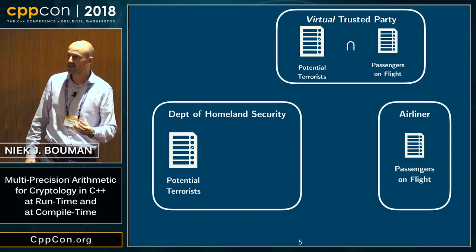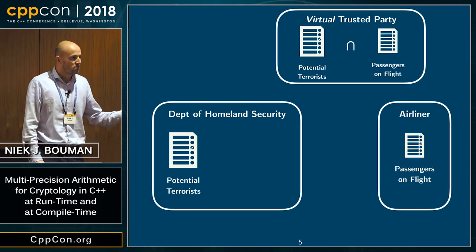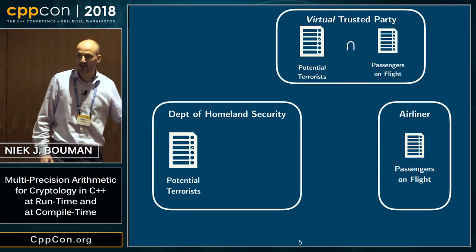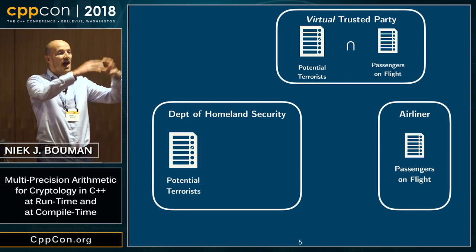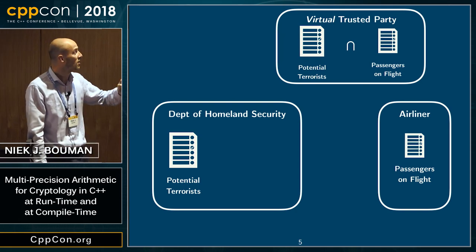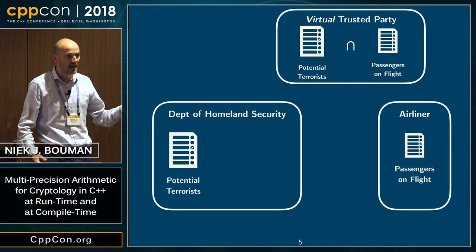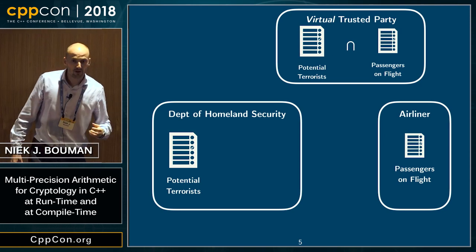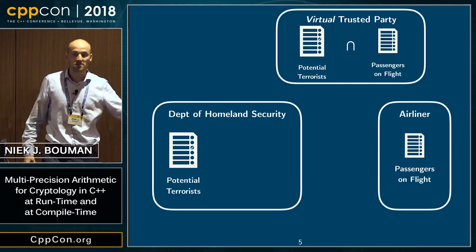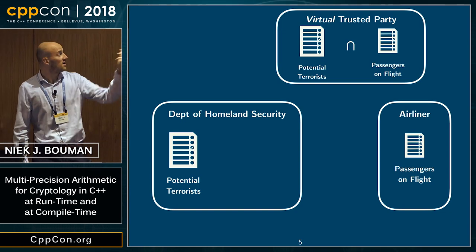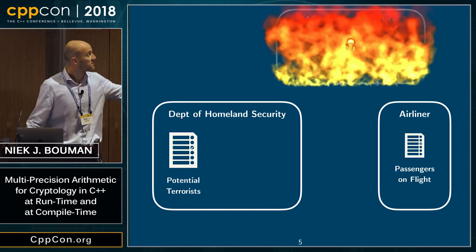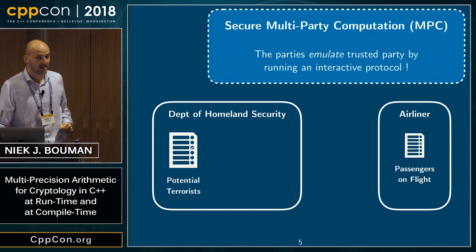I do research in a field called multiparty computation, which is a subfield of cryptography. With multiparty computation, you can create a protocol so that the airliner and the Department of Homeland Security can together run an interactive protocol and thereby emulate this trusted party. That trusted party is not a physical object — it is an imaginary thing created by running this protocol. The protocol guarantees that the Department of Homeland Security does not see the airliner's input, and the airliner does not see the DHS input, but only if there is a match would the US government get the relevant items in the intersection.